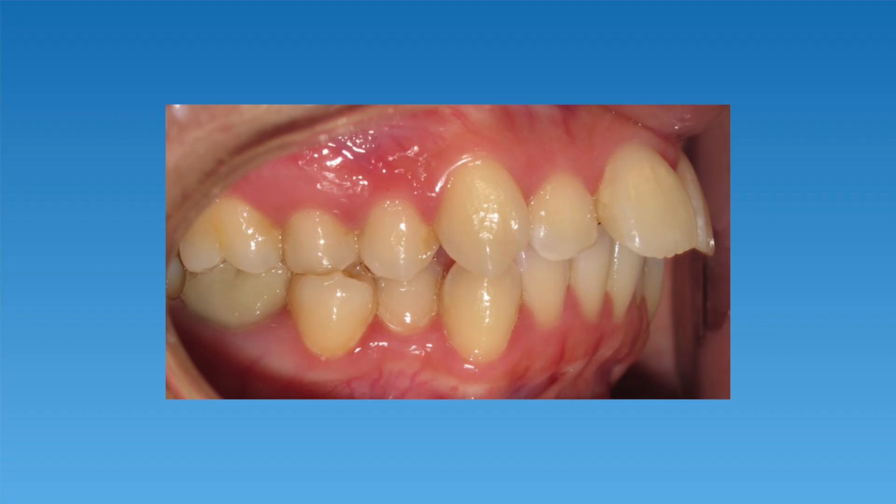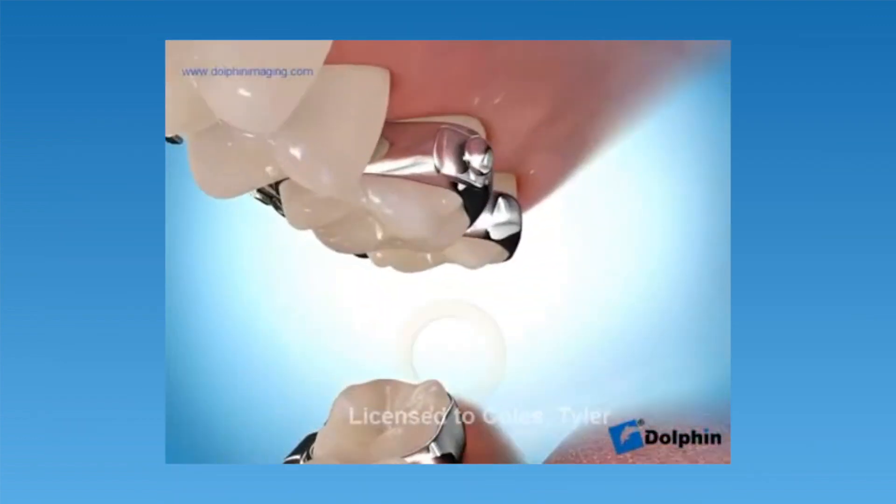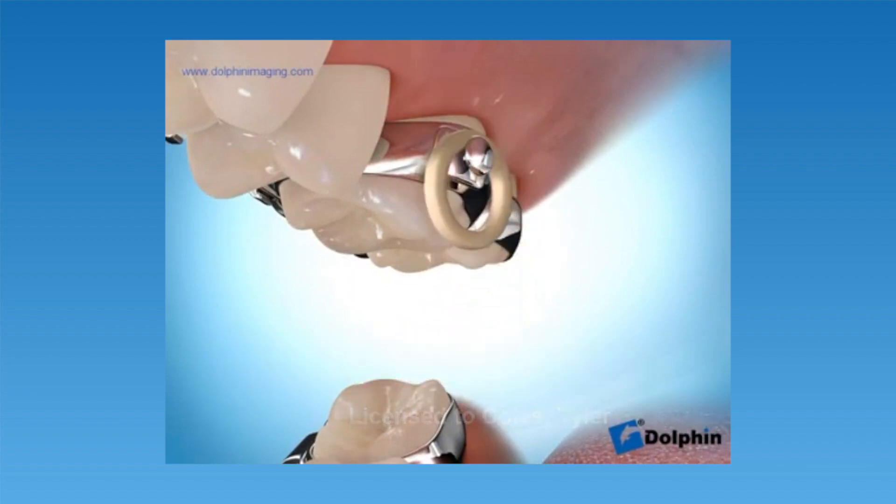Now that we've defined crossbites and why they should be fixed, let's discuss specific treatments for each type and show you before and after photos of patients who had crossbites corrected in our office. For posterior crossbites, if a patient has a mild posterior crossbite, they may be treated with a combination of braces and rubber bands. This type of treatment usually works best when only a single tooth is in crossbite. In this animation, you'll see how braces and rubber bands can be used in combination to correct mild crossbites.